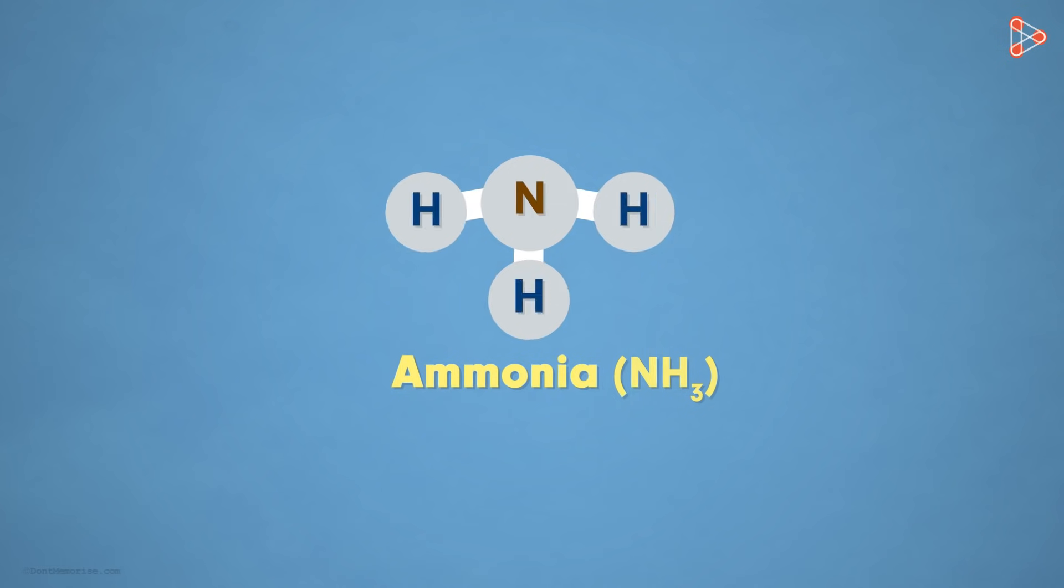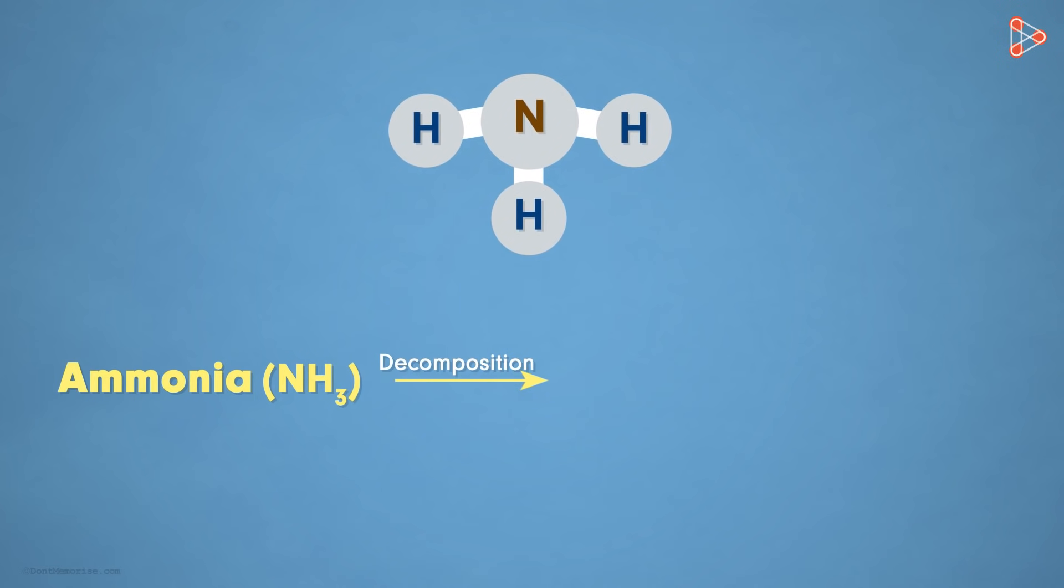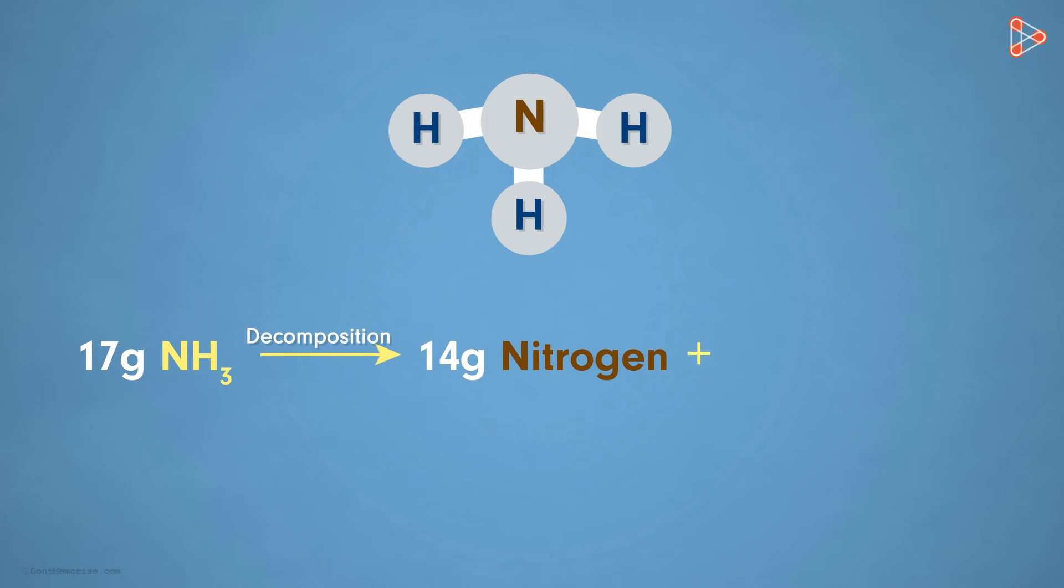The best example to study this is that of ammonia. If we decompose ammonia by any means, say by extreme heat or some other way, then we get the nitrogen and hydrogen atoms in the same proportions by mass. So let's say we take 17 grams of ammonia. If we decompose it, then we will get 14 grams of nitrogen and 3 grams of hydrogen.